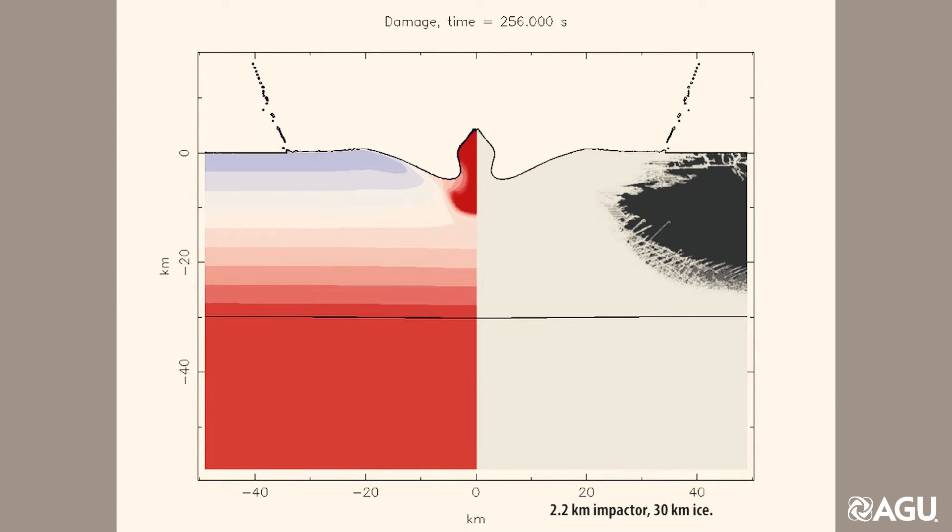This first simulation shows a 2.2 kilometer object impacting 30 kilometer ice. The transient cavity is quite deep, about 11.5 kilometers, but the 30 kilometer thick ice layer is not penetrated.